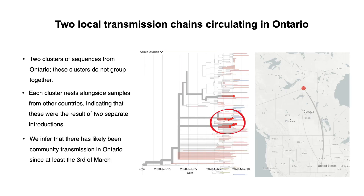Looking at Canada, we see two clusters of sequences from Ontario. These clusters do not group together, and each cluster nests alongside samples from other countries, indicating that these were the results of two separate introductions. Within each cluster, however, each of these cases is most closely related to other cases from Ontario, indicating that this is most likely local community transmission. We infer that there has likely been community transmission in Ontario since at least the 3rd of March. Interestingly, most of the surrounding sequences — the faded tips — are from the US, suggesting significant mixing between the two countries.